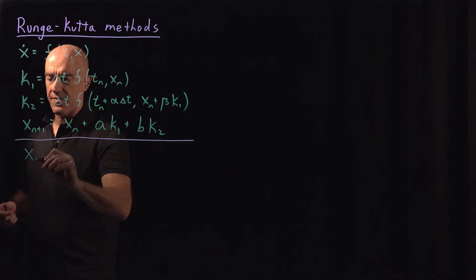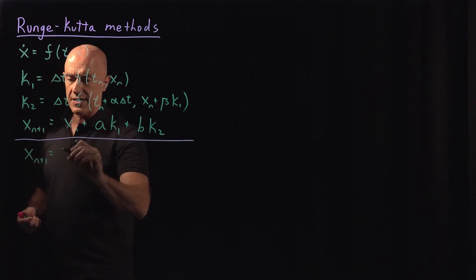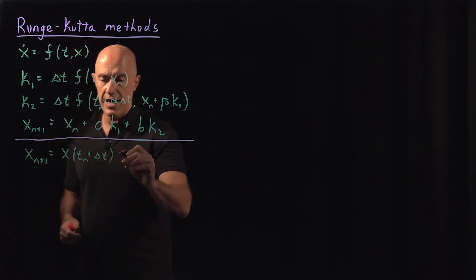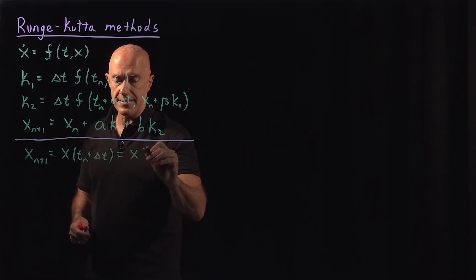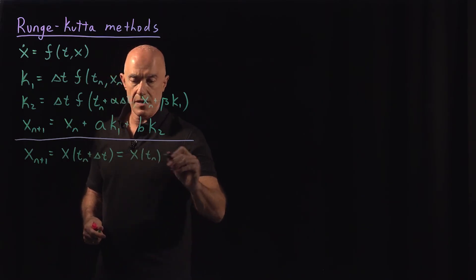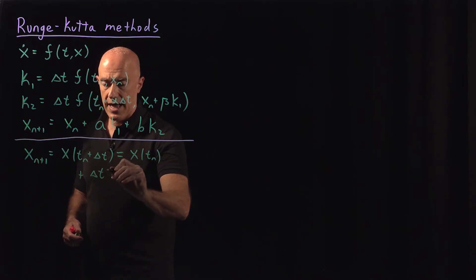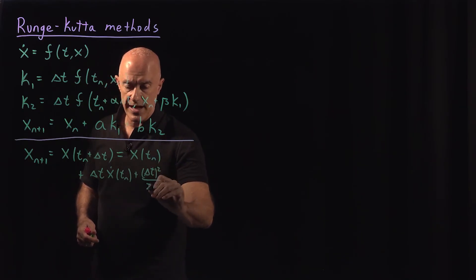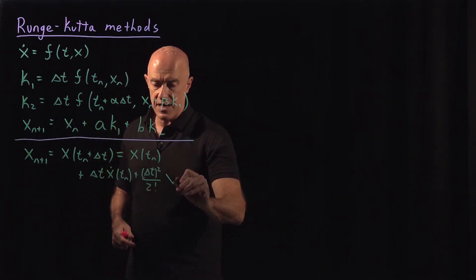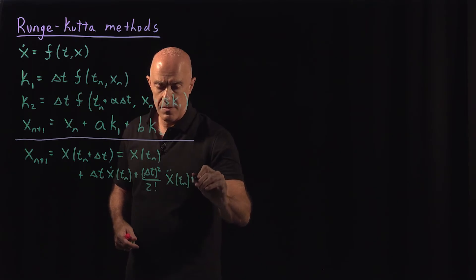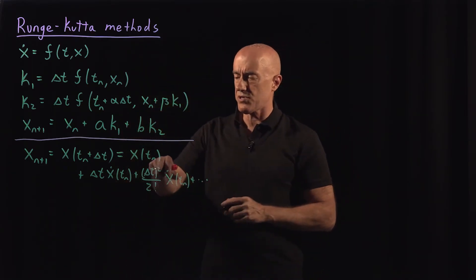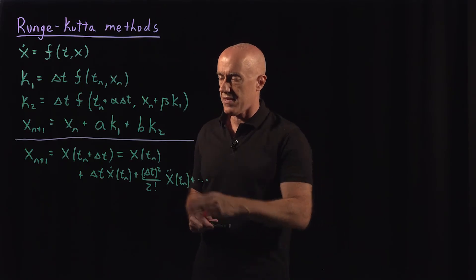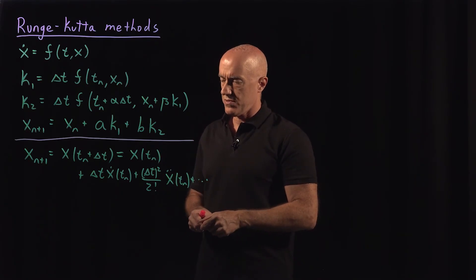Let's start with the first Taylor series. If we look at x of n+1, that's x at tₙ + Δt. Taylor-expanding this function gives x at tₙ, plus Δt·ẋ at tₙ, plus Δt²/2·ẍ at tₙ, plus higher-order terms proportional to Δt³. We're going to throw those away — that's why it's called a second-order method. We keep only terms up to Δt².